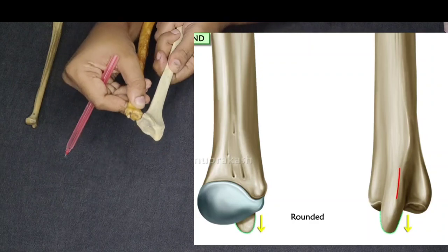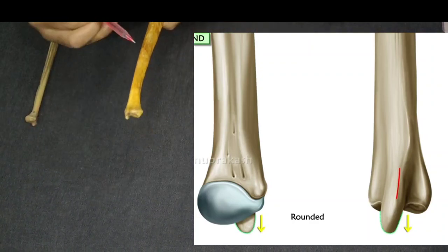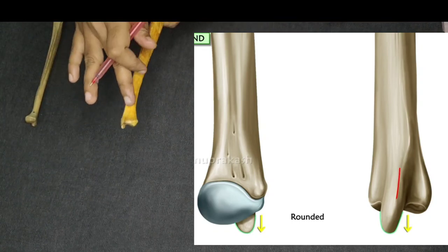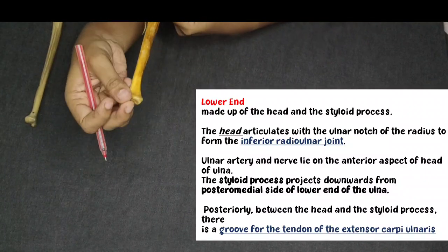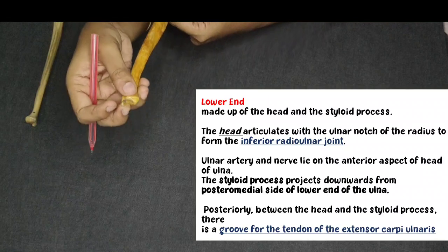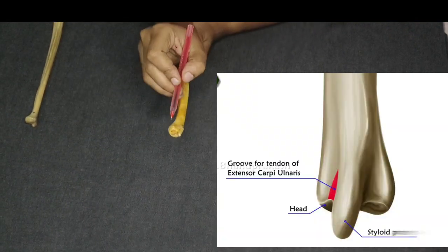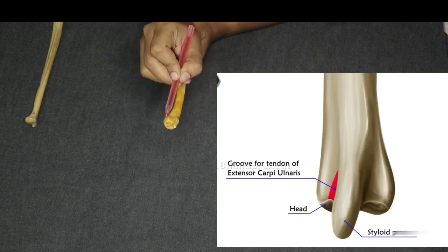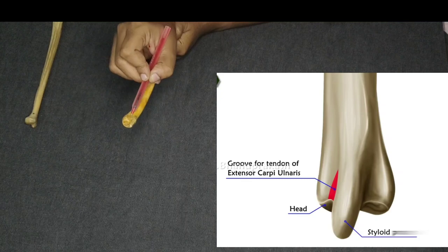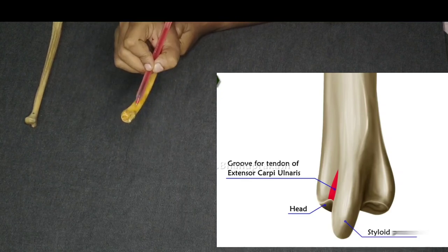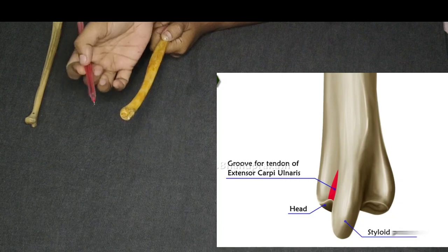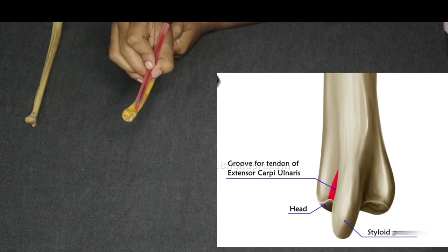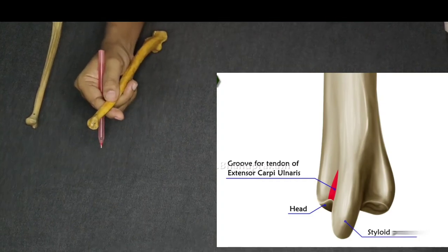Coming to the lower end — there is a rounded head and a styloid process. The rounded head articulates with the lower end of the radius at the radial notch. There is a groove between the head and the styloid process — the tendon of the extensor carpi ulnaris passes through this groove. This muscle helps attach the carpal bones to the ulna. That is all about the lower end.